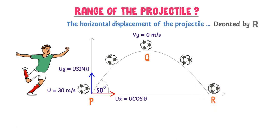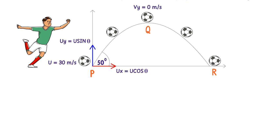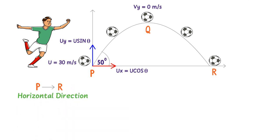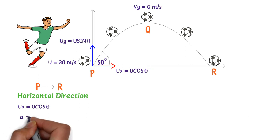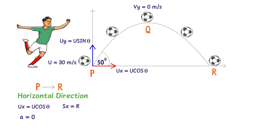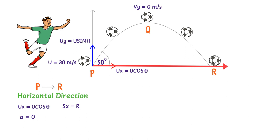I am interested to find the horizontal range of the projectile. To do so, I consider the motion of the ball from P to R in the horizontal direction. The initial velocity of the ball in the horizontal direction is ux equal to u cos theta. The acceleration of the ball A is equal to zero in the horizontal direction, because no force acts on the ball in the horizontal direction, as already discussed in the first lecture. The horizontal displacement of the ball is sx equal to R. The time of flight of the ball from P to R is t equal to 2u sin theta upon g.